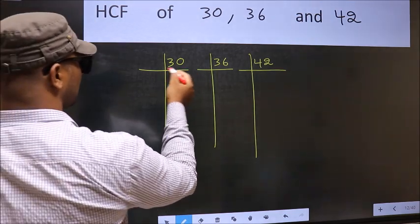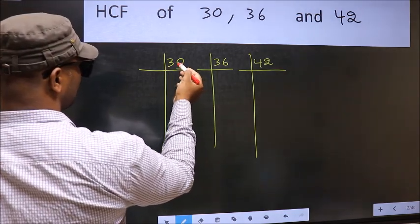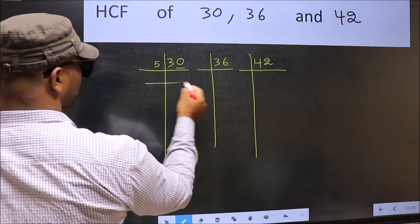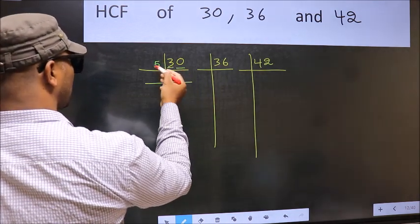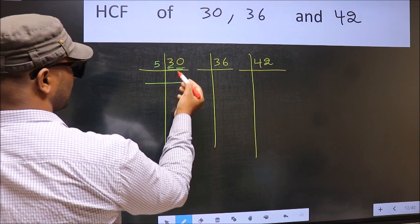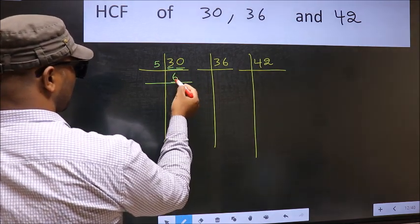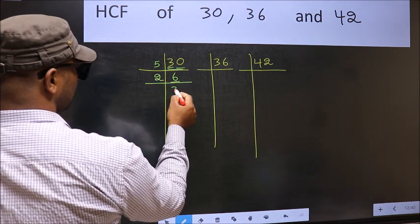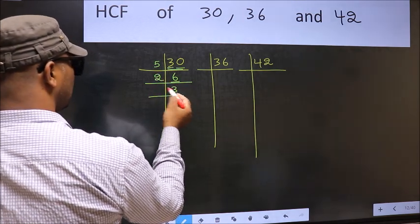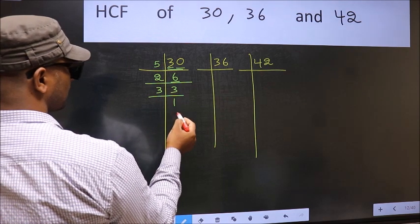In this number, last digit 0, so take 5. First number 3 smaller than 5, so two numbers 30. When do we get 30 in 5 table? 5, 6, 30. Now 6 is 2, 3, 6. Now we have 3, 3 is a prime number, so 3, 1 is 3.